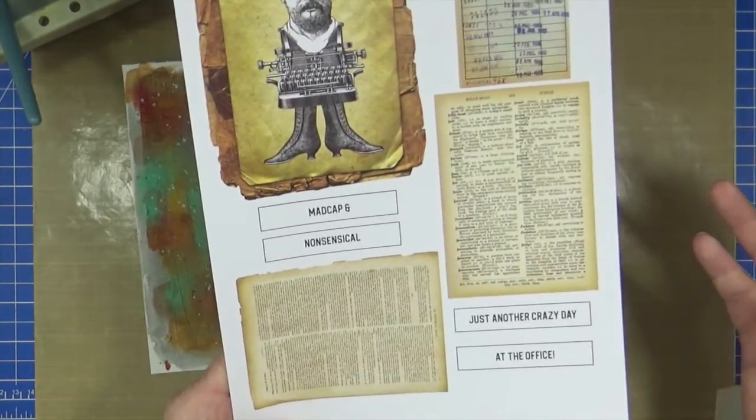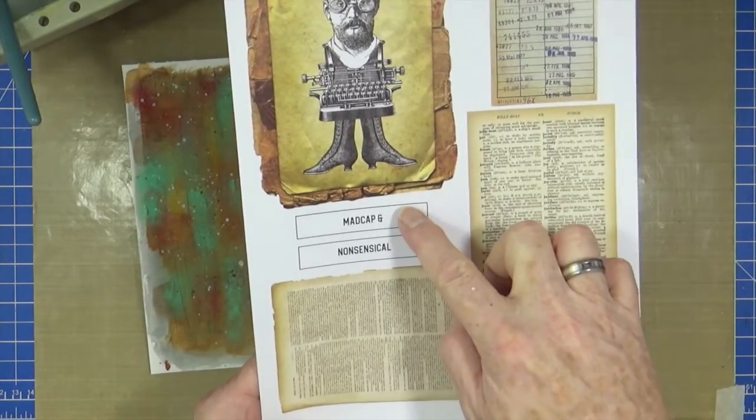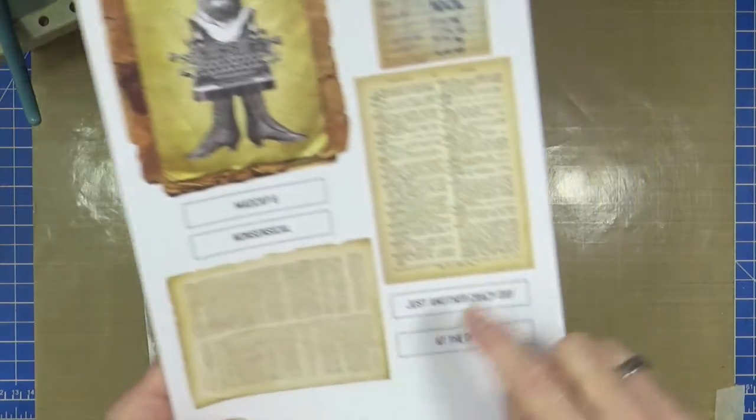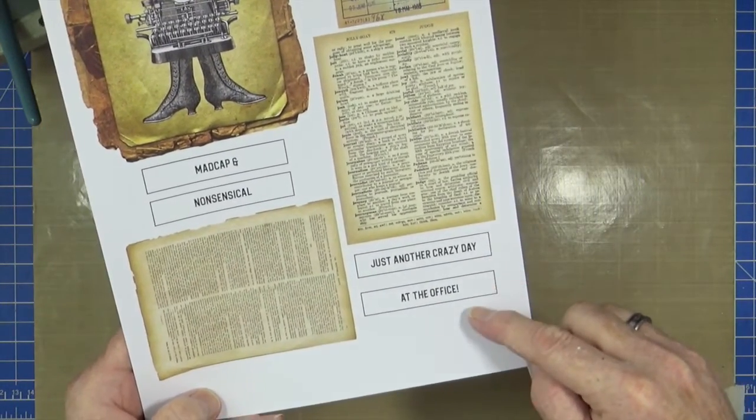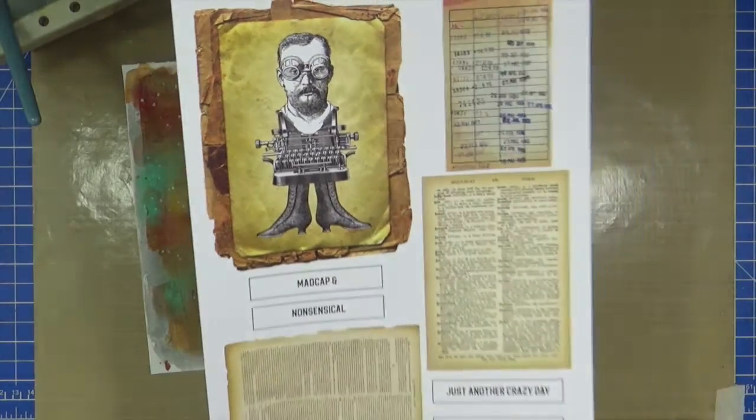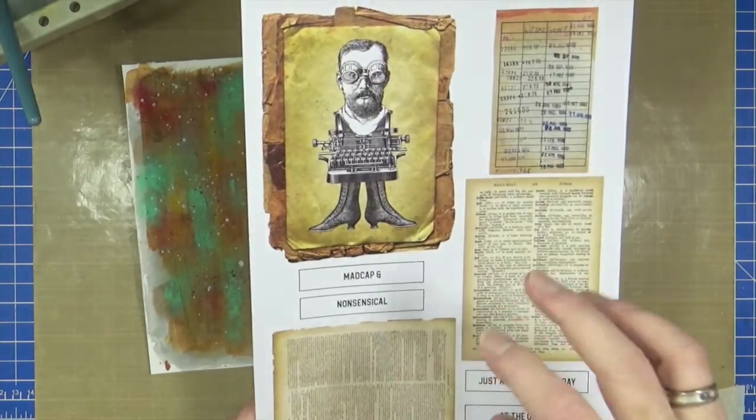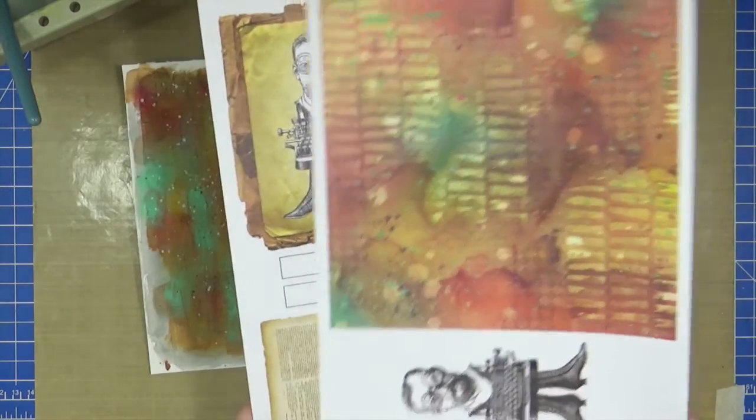If I choose. I've got madcap. And nonsensical. Which I can add to it. Or I've got. Just another crazy day. At the office. Because there's a typewriter. Involved in there. Look. So. And we've got a few bits and pieces. To use. And cluster. On there. But. There's a second page. On this kit. Where I've scanned. That original motherboard. That I was talking to you about. This morning. A masterboard. That I was showing you this morning.